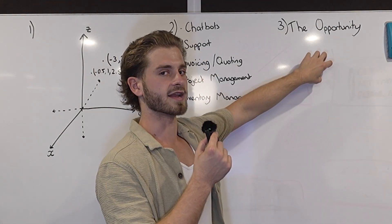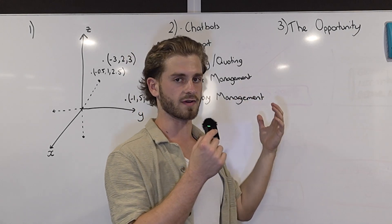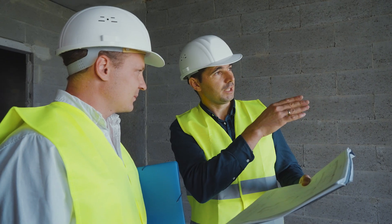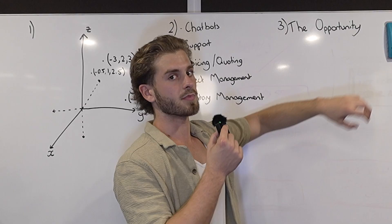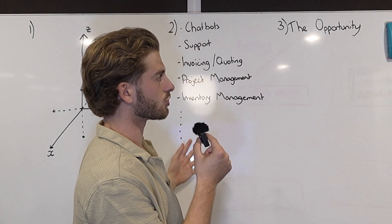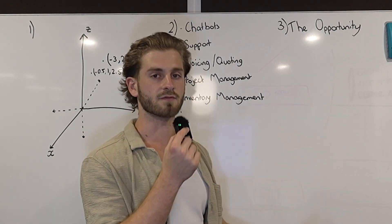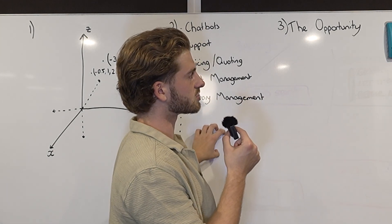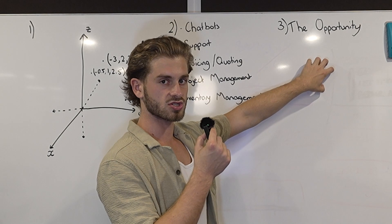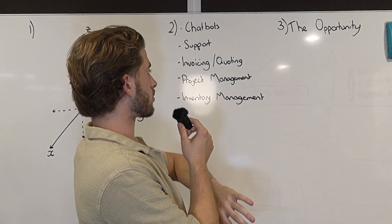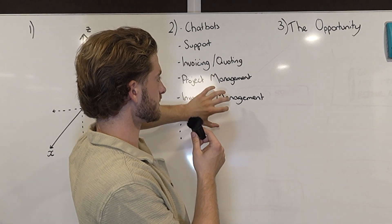Now before when we were building this we were using a regular AI agent but with ChatGPT, and what was happening was for example for weekly payroll to some of our developers, we'd send the transaction and sometimes the AI agent would categorize that as payroll and sometimes it would categorize it as professional fees. Now our definition of professional fees is to contractors and payroll is to registered employees.